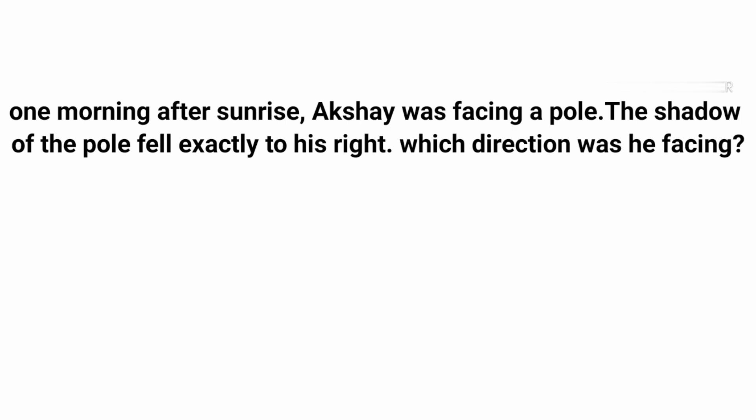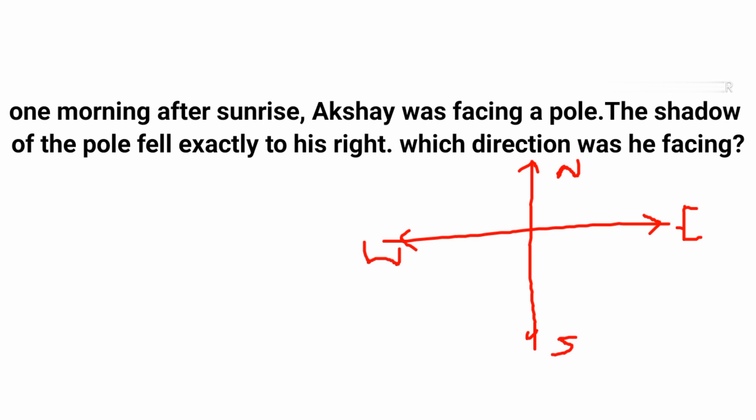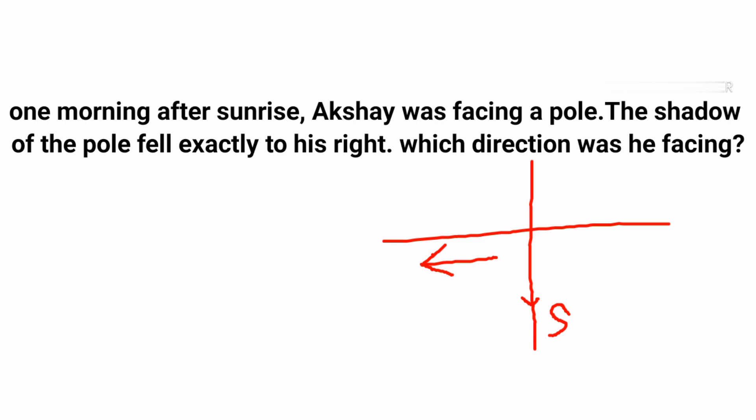Problem 1: One morning after sunrise, Akshay was facing a pole. The shadow of the pole fell exactly to his right. Which direction was he facing? Since sun rises in the east, the shadow will be formed towards the west. The shadow fell to his right. If he is facing north, the shadow is to the left — so not north. If he is facing south, the shadow will be to the right — so he is facing south.